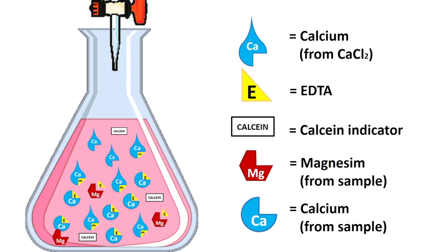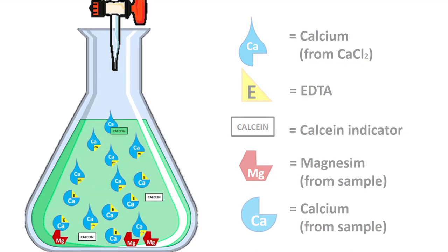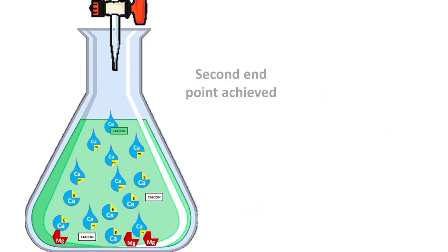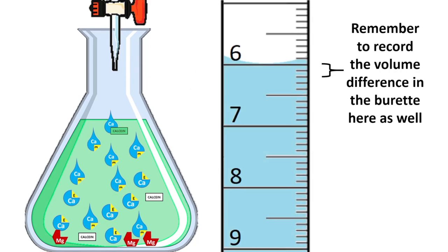In this process, all magnesium ions bound to EDTA are replaced by additional calcium ions, and magnesium hydroxide precipitates are formed as a result. A small amount of excess calcium ions bind to the calcium indicator and cause the solution to turn into a permanent green — this is the second endpoint. You should stop here and record the volume of calcium chloride used.